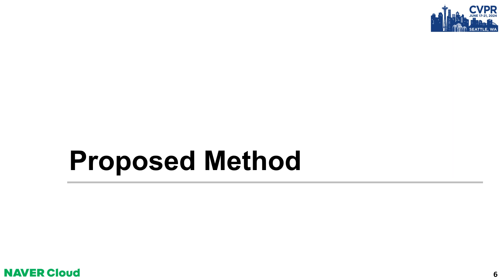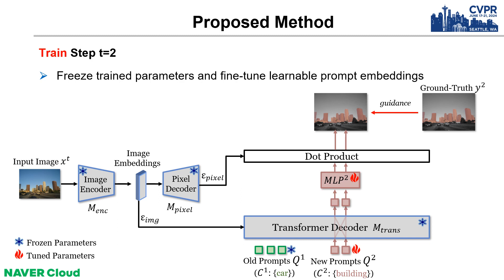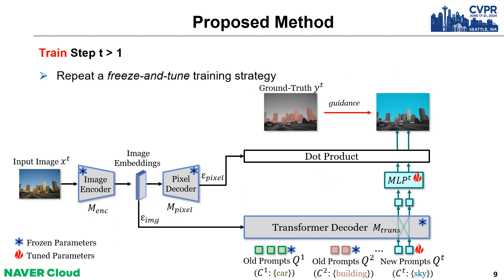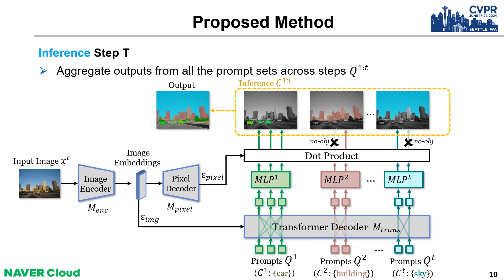Let me introduce our proposed method and training procedure. In the first step, we train all parameters of the base model, including the image encoder, pixel decoder, and transformer decoder. Then we start continual learning in panoptic segmentation: we freeze the trained parameters of the base model and fine-tune a set of new learnable prompt embeddings. As new classes emerge, we apply this freeze-train strategy repeatedly. In the inference stage, we aggregate segmentation outputs from all prompt sets across steps. Our approach ensures that previous knowledge is preserved with model freezing, while enabling efficient integration of new knowledge through prompt tuning.